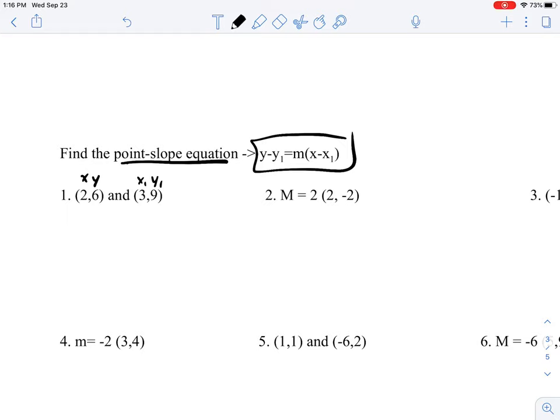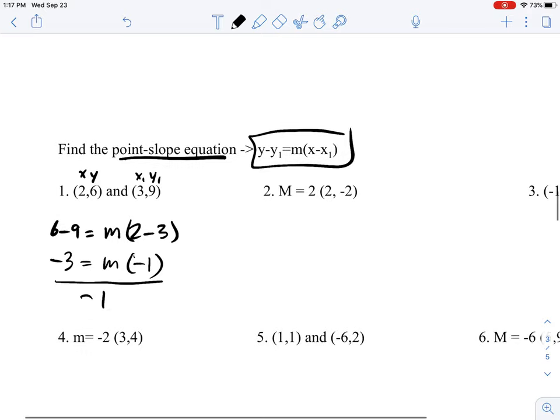Now you've just got to plug in the information that you have. So 6 minus 9 equals m times x minus x₁, which would be 2 minus 3. Then you would get negative 3 equals m times negative 1. If we divide by negative 1 on both sides, we get m equals 3. That means our slope will be 3.